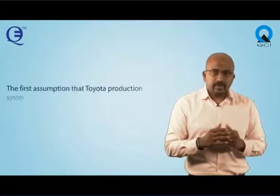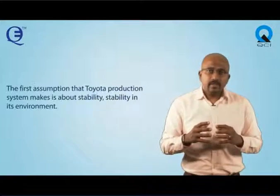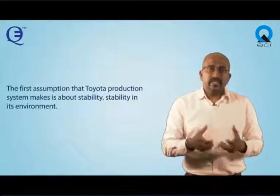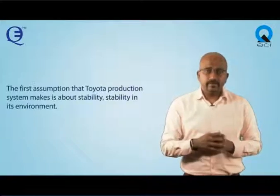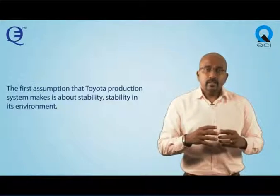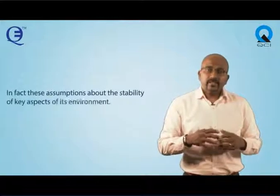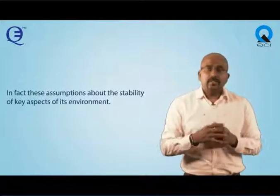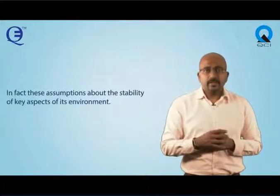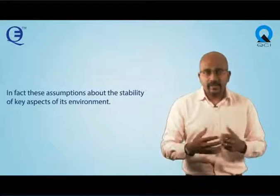The first assumption that the Toyota Production System makes is about stability — stability in its environment. In fact, it makes three assumptions about the stability of three aspects of its environment.